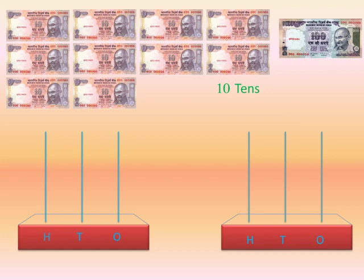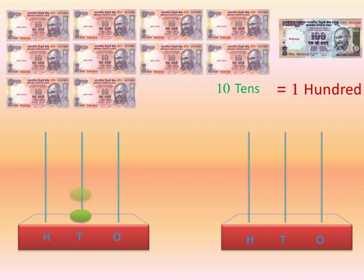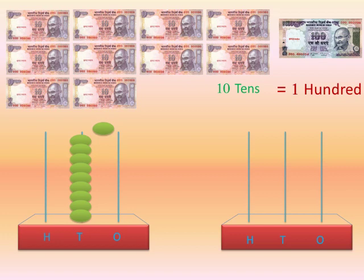Now, let's add some beads to the tens abacus stick. It is 1, 2, 3, 4, 5, 6, 7, 8 and 9. Since we cannot put a 10th bead in the tens stick, put 1 bead in the hundreds stick instead of putting 10 beads in the tens stick. We do this by removing all beads from the tens stick.